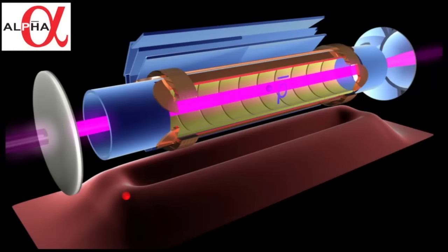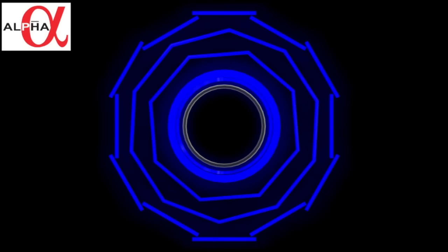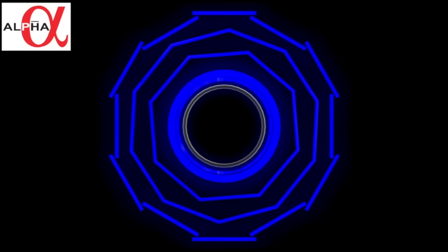Now, the antiproton is not trapped and collides with the wall and annihilates, and we can detect that. At the end, we can also detect whichever antihydrogen atoms might be remaining in the standard way by releasing them from the trap where they annihilate on the walls.